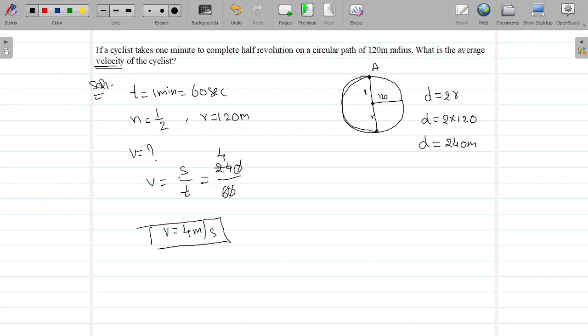In the same way, if you want to find average speed, average speed equal to distance by time. What is the distance here? From here to here it travels. How much distance it travels? Semicircle. 2 pi r n by t. Distance is 2 pi r is 120 into n is half revolution, 1 by 2 by time is 60.